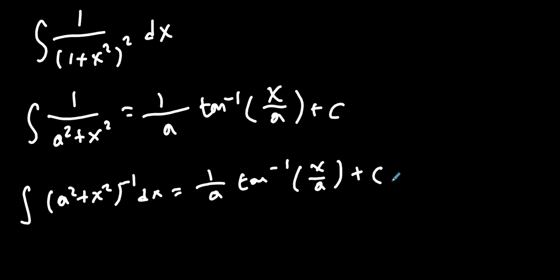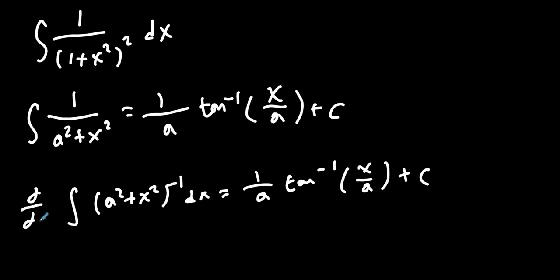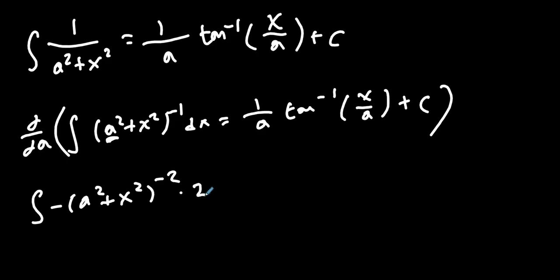Now let's take the partial with respect to 'a' of all of this — this is what we mean by differentiating under the integral sign. Taking the partial with respect to our parameter, we have to use the chain rule, so we move the exponent down and get the integral of negative (a squared plus x squared) to the negative two. By the chain rule, we multiply by the derivative of the inside with respect to 'a', which is 2a — since x squared is a constant, it cancels out — giving us negative 2a times (a squared plus x squared) to the negative two, dx.